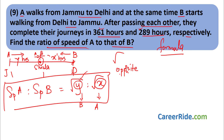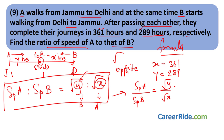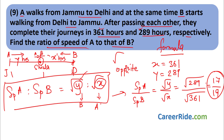In this problem, after meeting, A takes 361 hours (X = 361) and B takes 289 hours (Y = 289). Speed A / Speed B = √289 / √361 = 17/19. The ratio of speed of A to speed of B is 17:19. Just remember the root sign and the swap — that is all there is to this formula.